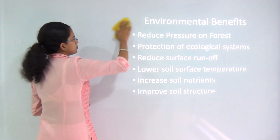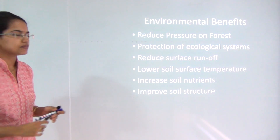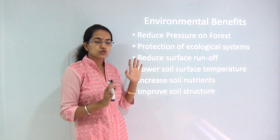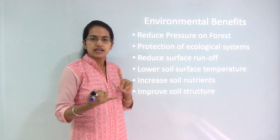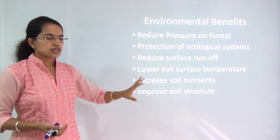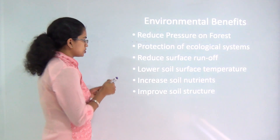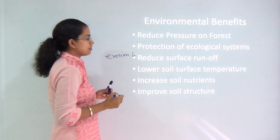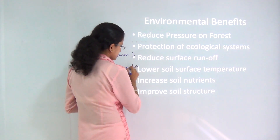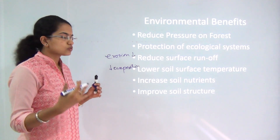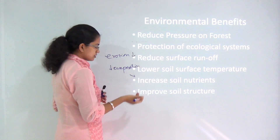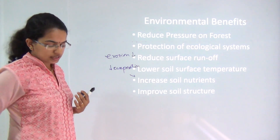Now, the important benefits we can get from agroforestry include environmental, economic, and social benefits. For environmental benefits, it reduces pressure on the forest, tries to maintain our ecological system, and since we are growing a lot of trees, surface runoff would definitely stop so the problem of erosion would decrease. You also get lower soil surface temperature leading to reduced evaporation, increased soil nutrient capacity from protein-rich plantations, and improved soil structure.